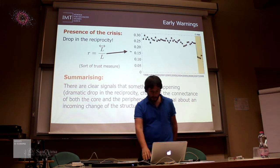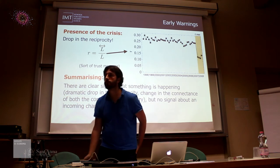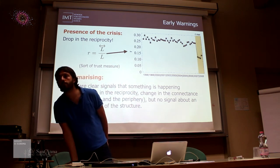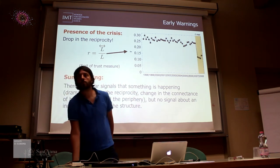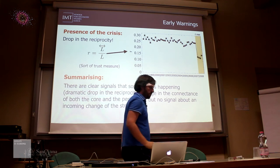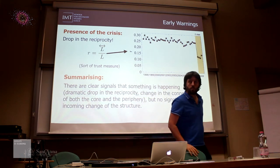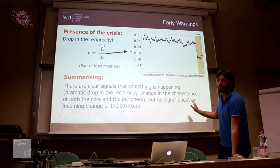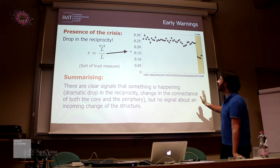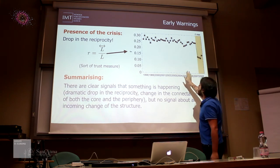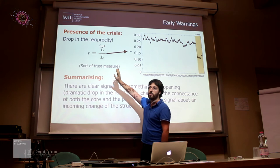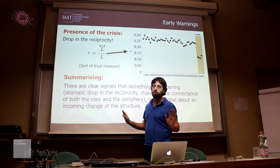A question was raised: is this really a warning signal, or just a description? At this level it is just a description — we simply have this metric and count the number of reciprocal links.